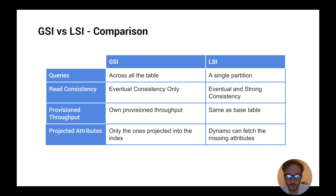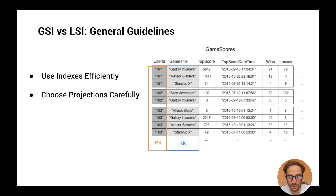Regarding projected attributes, when you query a global index you can only query the attributes that are projected into the index, whereas local indexes can fetch missing attributes from the base table. Now that we've explored the key characteristics, let's look at general guidelines and best practices. First, try to keep the number of indexes to a minimum. Don't create secondary indexes on attributes that you don't query often or that aren't part of your access pattern. Every time you create an index it increases your storage cost as well as read and write capacity unit costs. The idea is to keep the size of the index as small as possible.